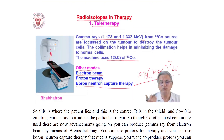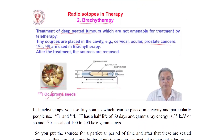Radioisotopes in therapy include teletherapy, where gamma rays from a 60Co source are focused on the tumour; collimation minimizes damage to normal cells. Other modes include electron beam, proton therapy, and boron neutron capture therapy. Brachytherapy is for treatment of deep-seated tumours not amenable to teletherapy — tiny sources are placed in cavities such as cervical, ocular, and prostate cancers. 192Ir and 125I are used in brachytherapy; sources are removed after treatment.